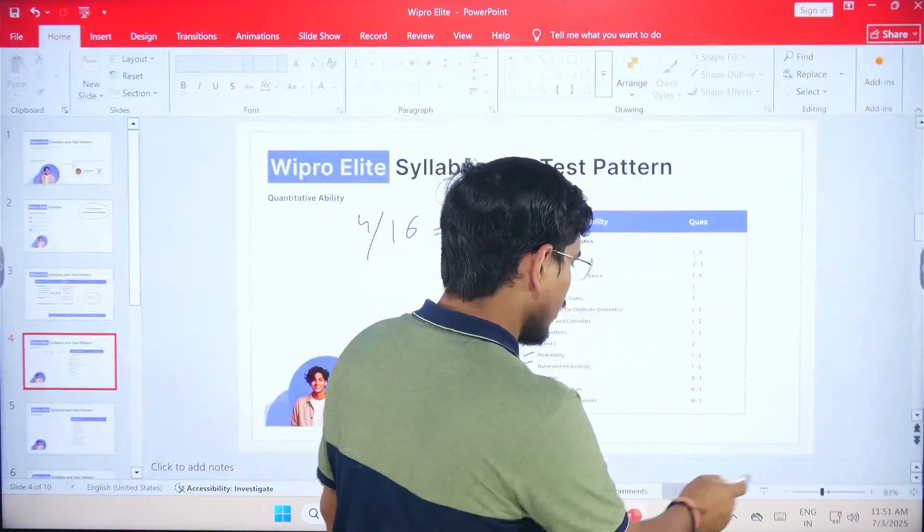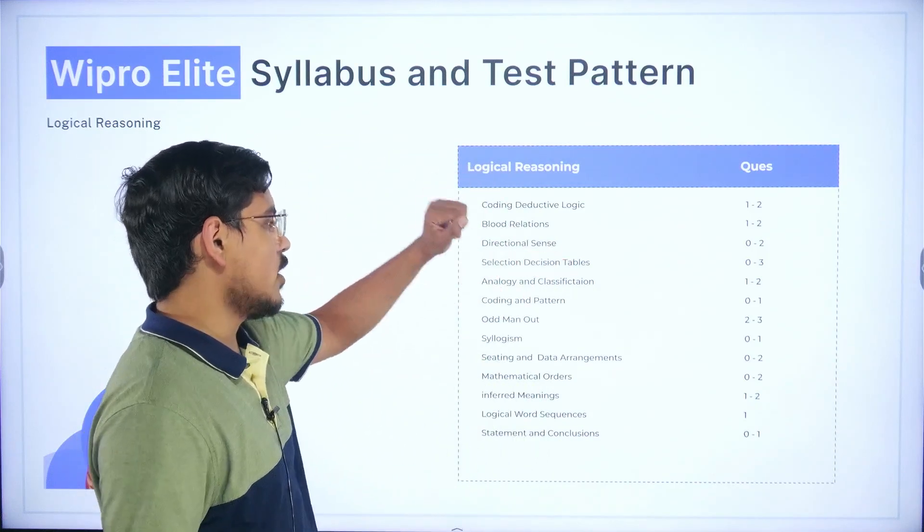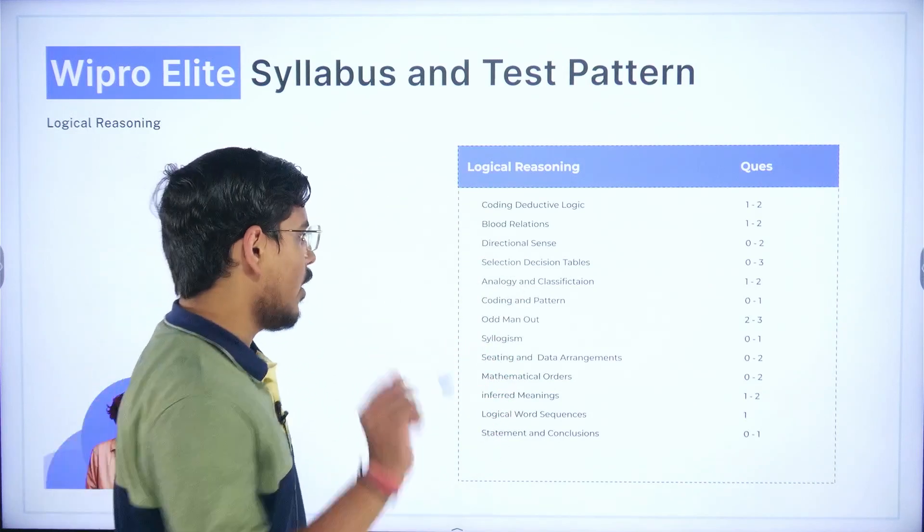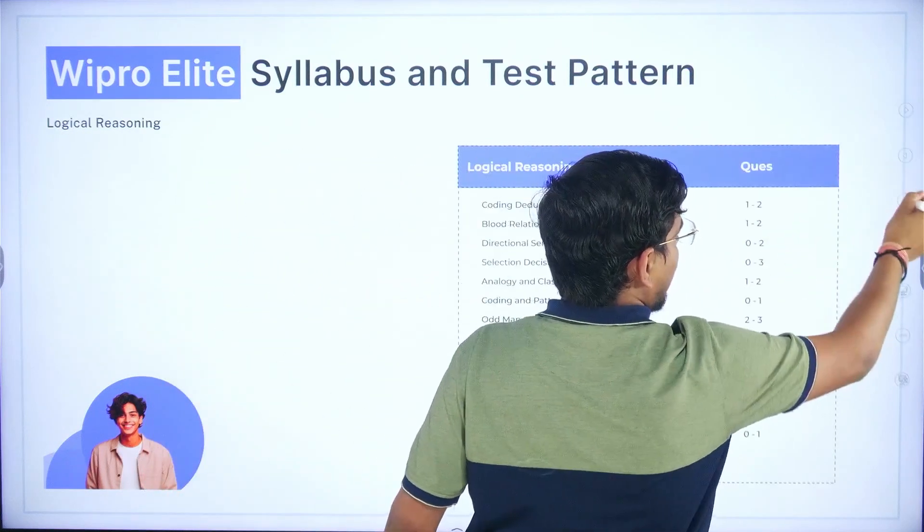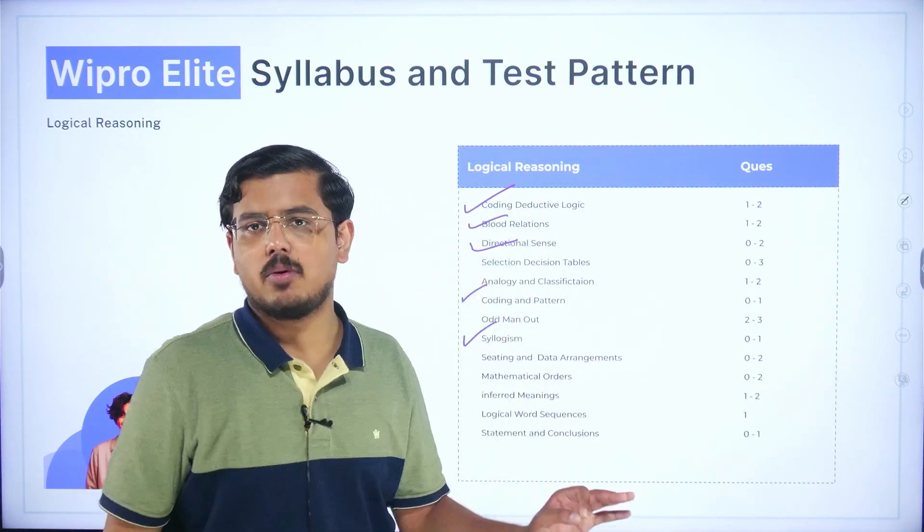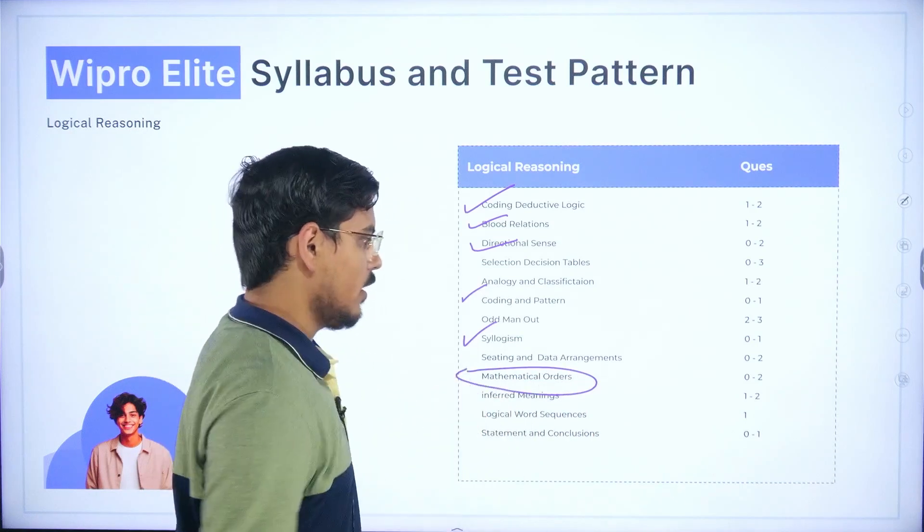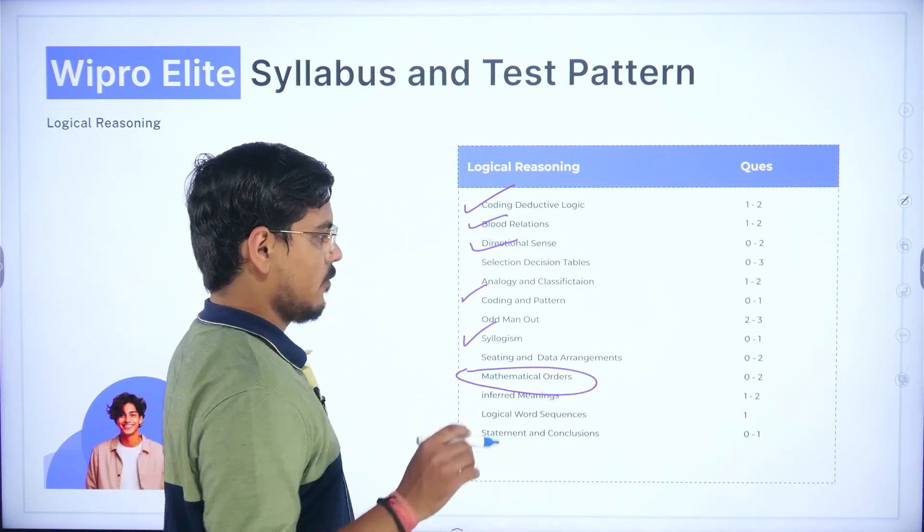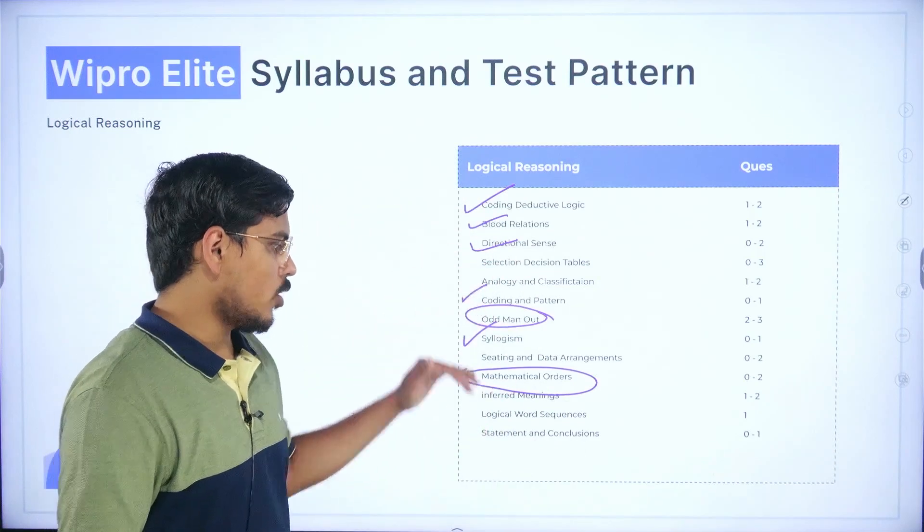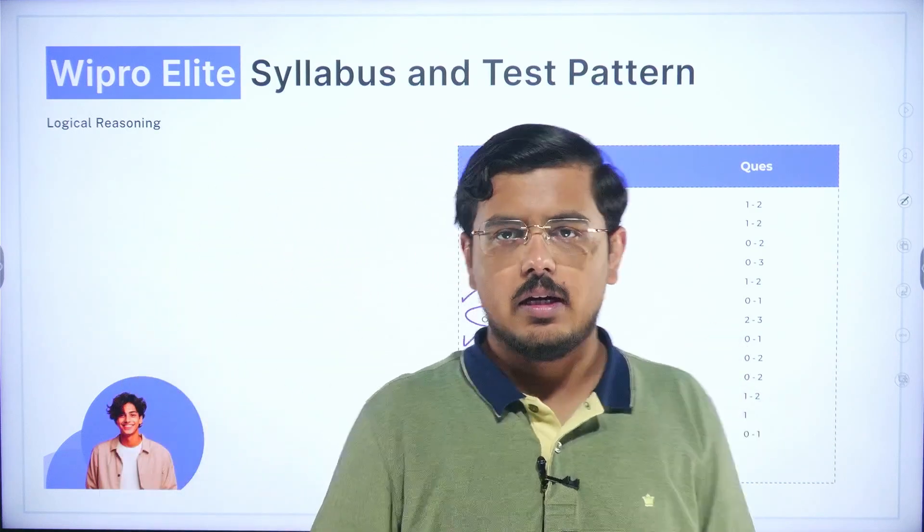Moving ahead to logical reasoning. In logical reasoning generally coding, deductive logic, data relations, directional sense, coding and pattern, odd man out, syllogisms, seating arrangements, mathematical orders such topics come. However directional sense, coding, deductive logic, blood relations, coding and pattern, syllogisms these are very very important topics. Inferred meanings is very important, always one question is there from inferred meanings. Take the screenshot again of this, this is the logical reasoning syllabus.